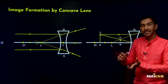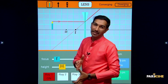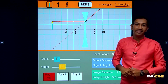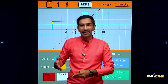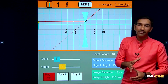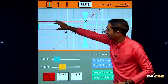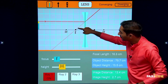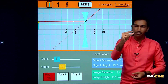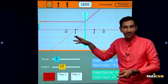Now image formation by concave lens. Let's go to the SimBucket simulation to see these cases with animations. For a concave lens there are only two main cases — unlike convex. First case: when the object is at infinity, all incident rays come in parallel. A ray parallel to the principal axis refracts and appears to be coming from focus F1. The image is highly diminished, virtual, and its position is at F1.